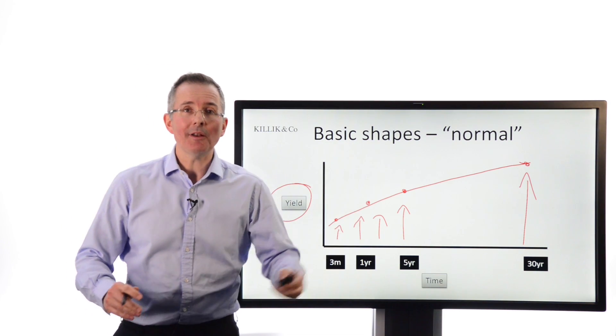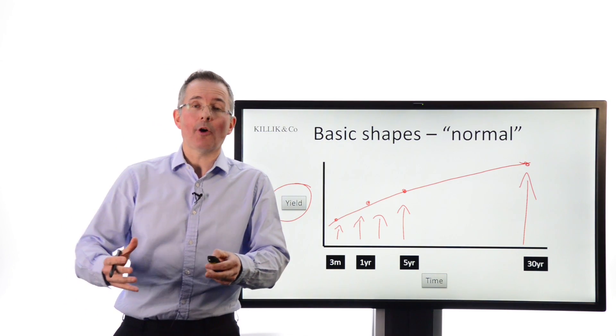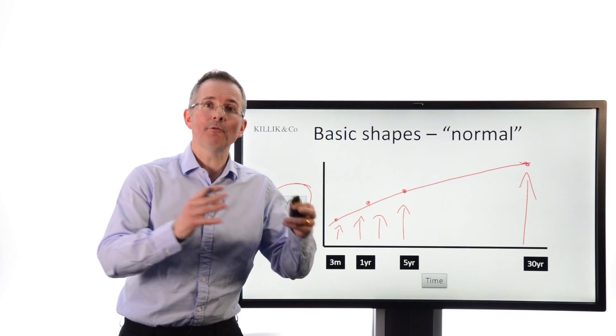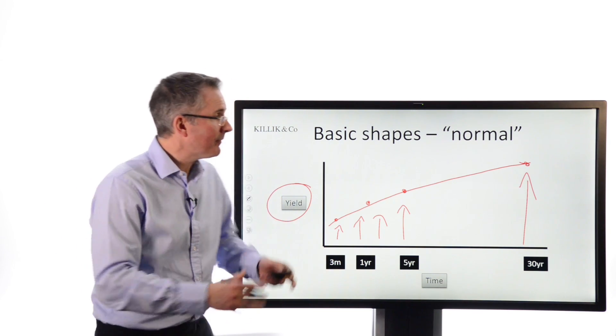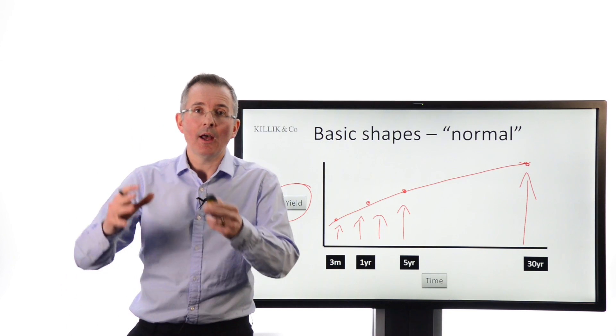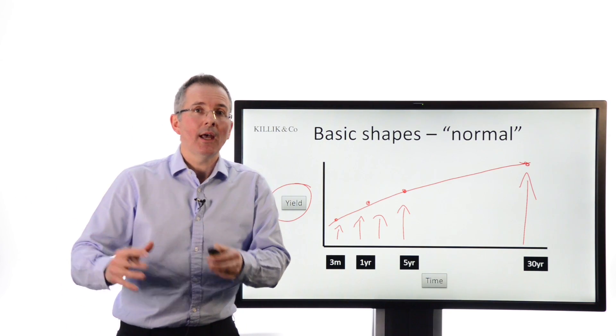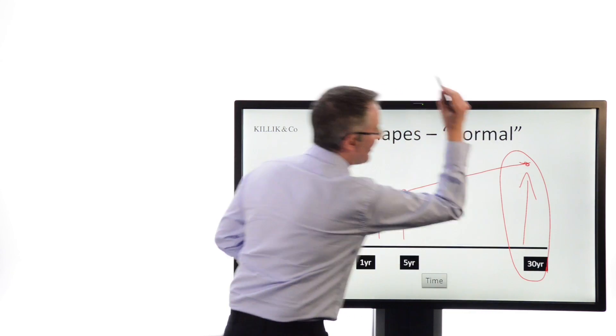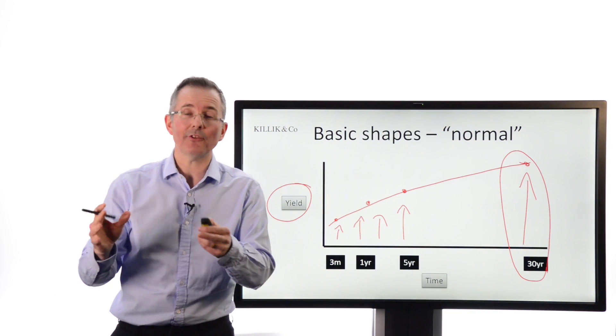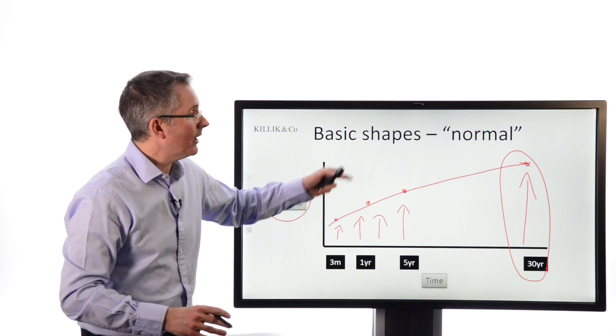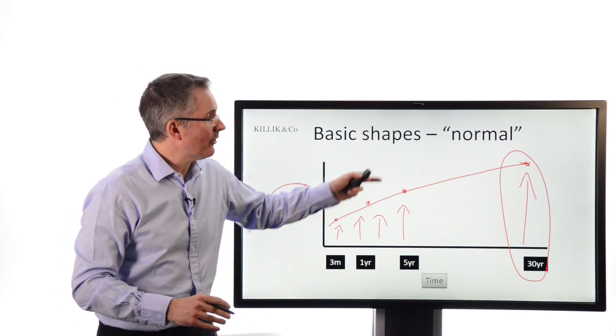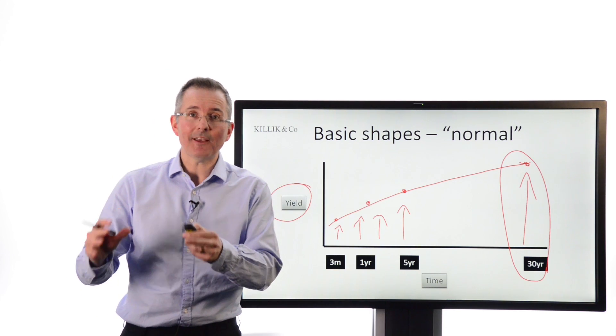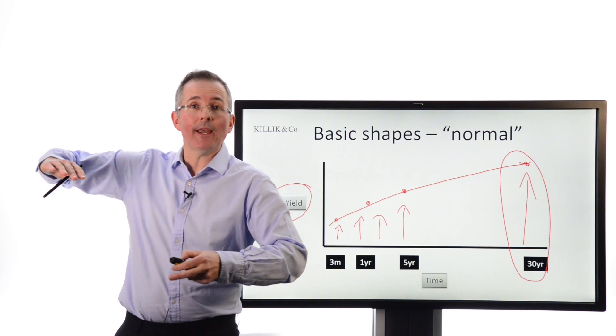And that would reflect an environment where investors, for example, think interest rates in the future are likely to rise or more likely to rise than fall. Because if you think about it, if general rates of interest are going to start rising and you're going to lock in to something that's got a 30-year maturity with a fixed income, remember, this is the fixed income IOU market, you're going to want to be rewarded for doing that.